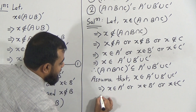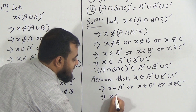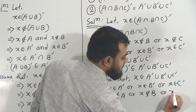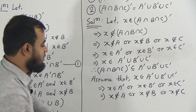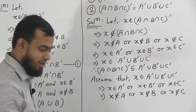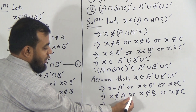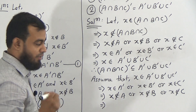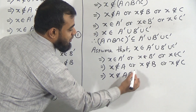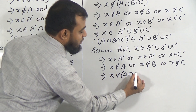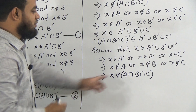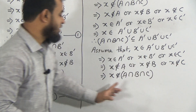x belongs to A prime means x does not belong to set A, or x does not belong to set B, or x does not belong to set C. Now, in place of 'or' we usually use union, but here because of the negative sign we will use intersection. So x does not belong to A intersection B intersection C.